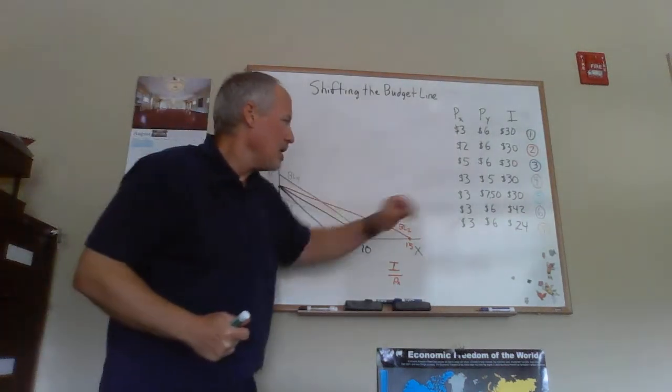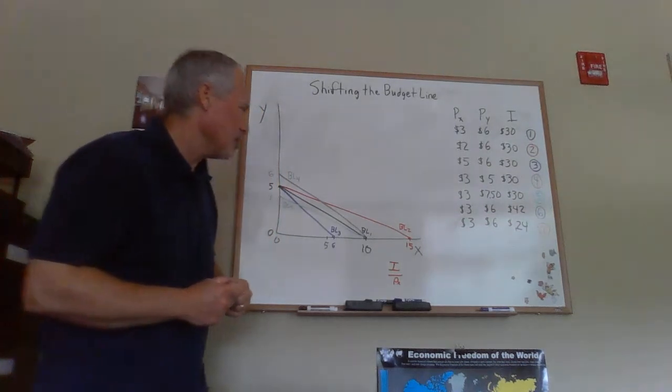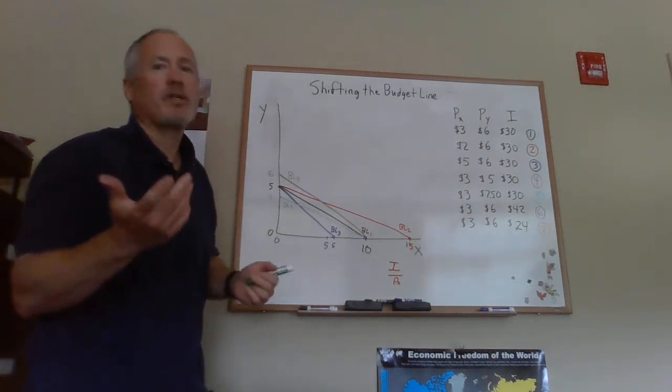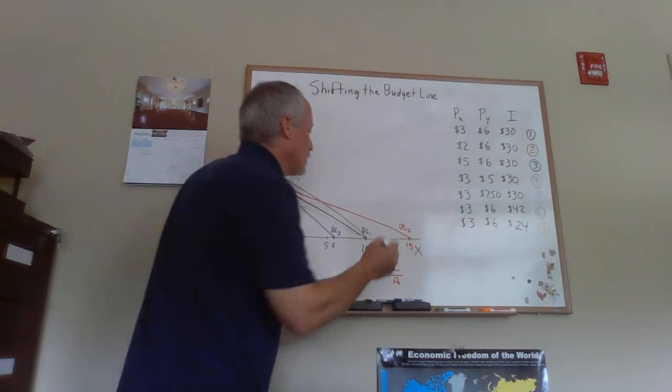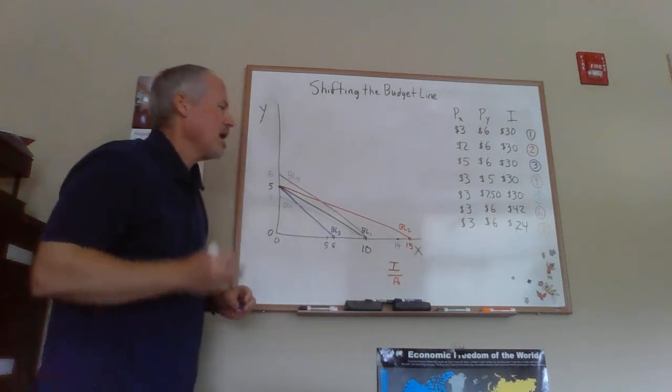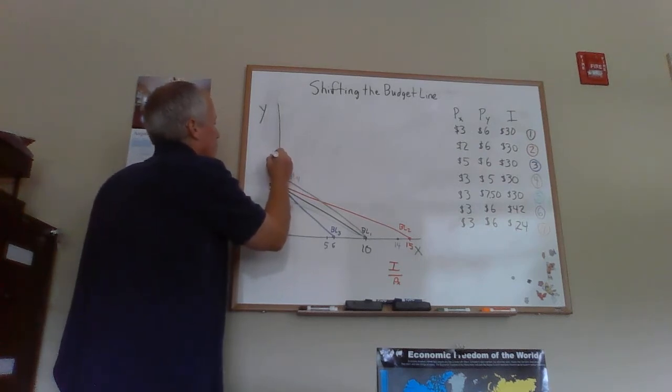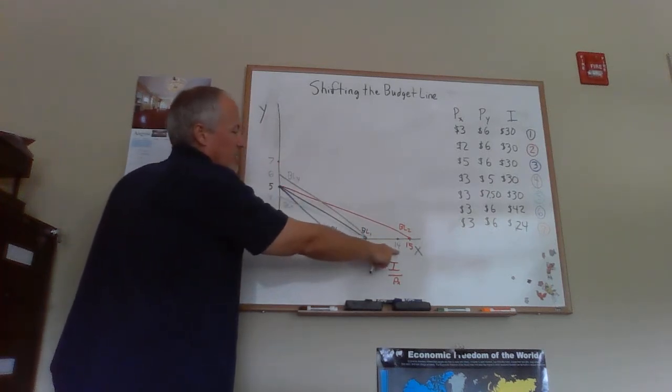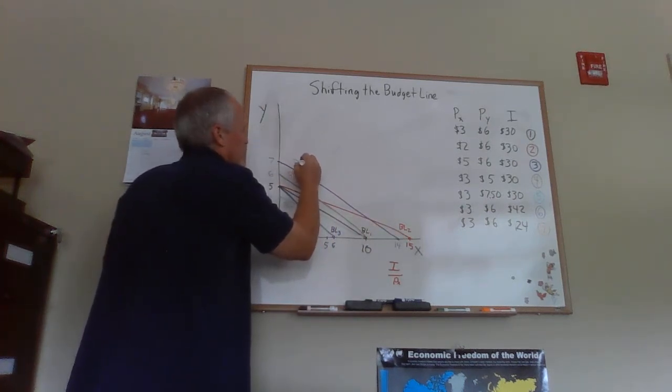Now number six, we're going to change income. Income goes to $42 with budget line number six. 42 divided by 3 is going to be 14. That's going to give us an intercept here. Then 42 divided by 6 is 7. We can connect these two dots, the intercept of 14 on the X axis and 7 on the Y axis, and that's going to be BL6.